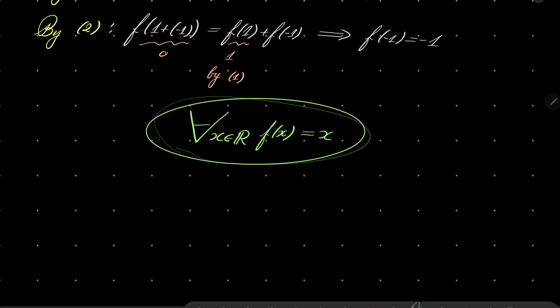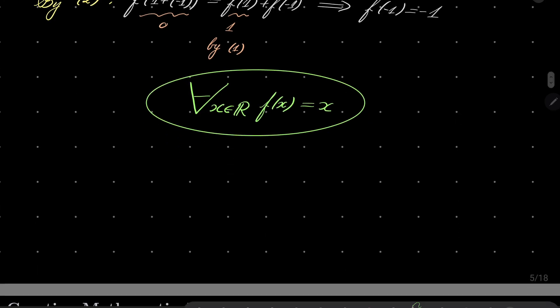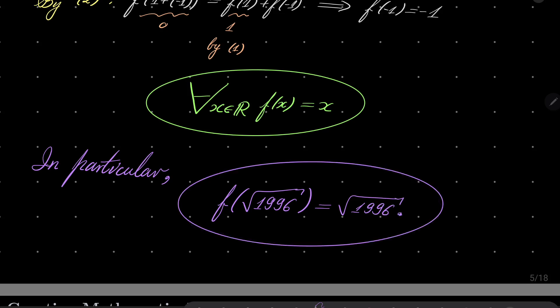And now, in particular, f(√1896) is √1896. And that closes our problem because it's exactly what we wanted. So yes, a pretty nice equation, I'd say. Thank you very much for watching, I hope that you've learned something new this time, and I will see you next time. Goodbye.